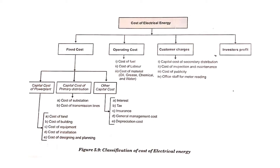If you look at this chart, the cost of electrical energy divides into four categories: fixed cost, operating cost, customer charges, and investor's profit. The fixed cost is the capital cost of the power plant — that is the cost of land, cost of building, equipment cost, installation cost, and planning cost. Another part of fixed cost is the capital cost of primary distribution — we have to install substations at various places and transmission lines to carry current from one place to another.